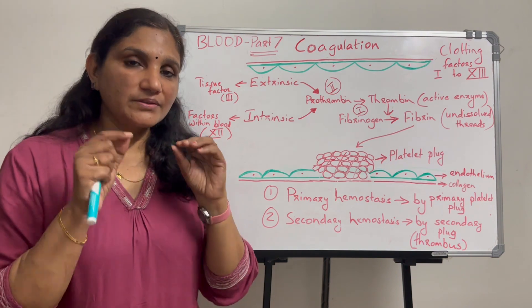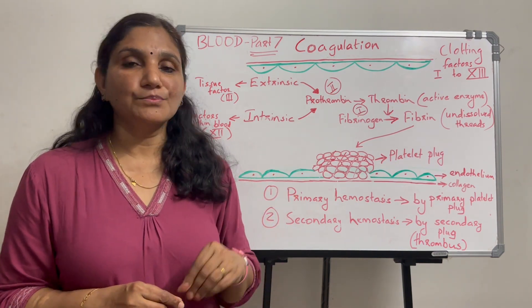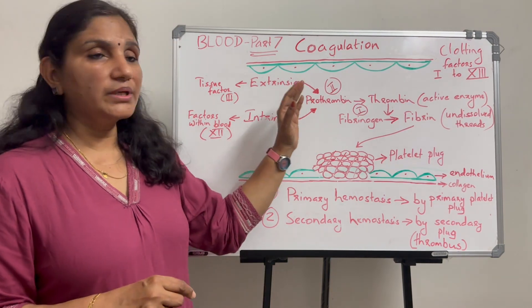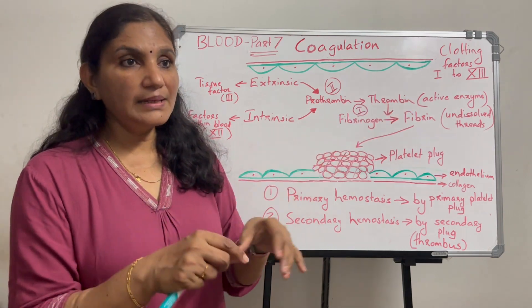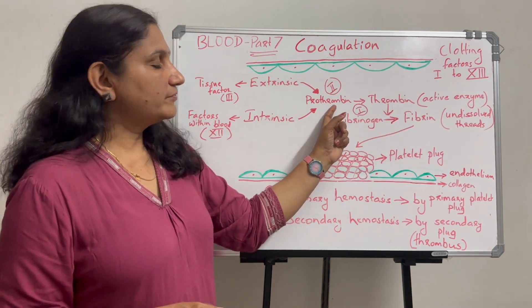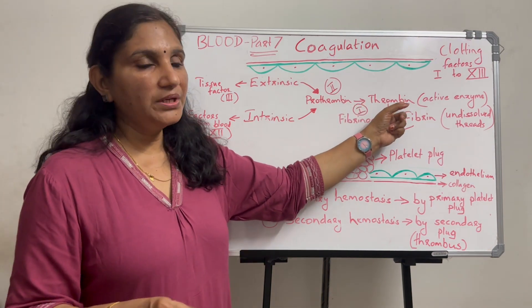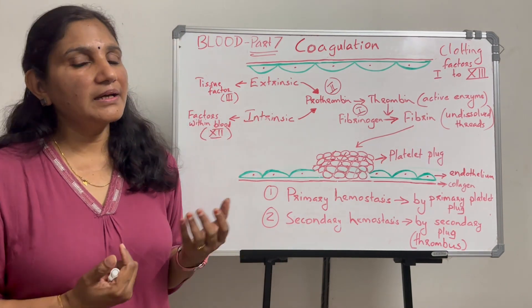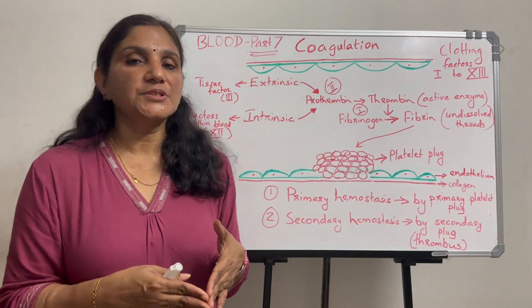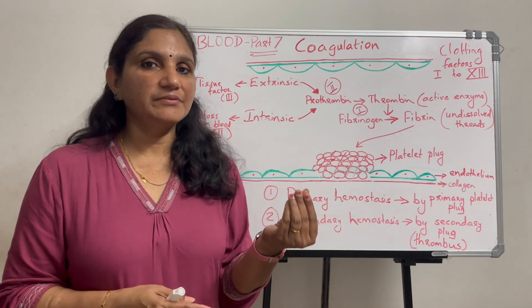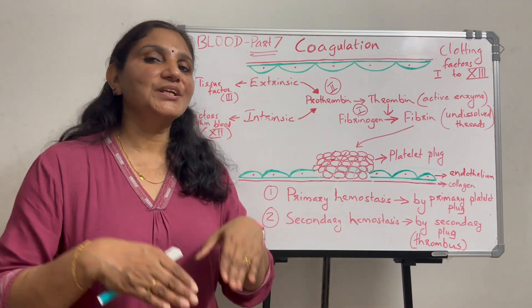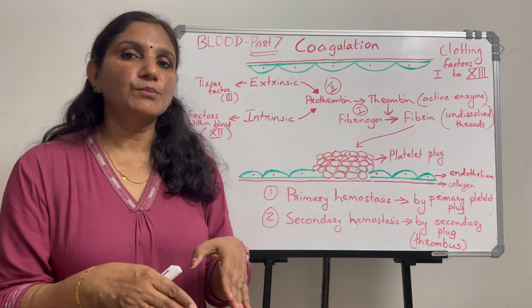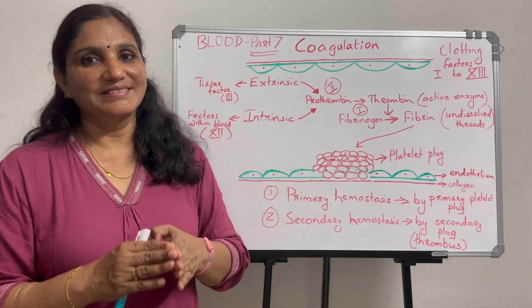These two pathways — intrinsic activation and extrinsic activation — are the two normal coagulation pathways. Both lead to a common final pathway. In the common pathway, prothrombin is converted to thrombin, and thrombin converts fibrinogen to fibrin. If you have a blood vessel injury, either pathway can be activated, and finally both join at the common pathway.